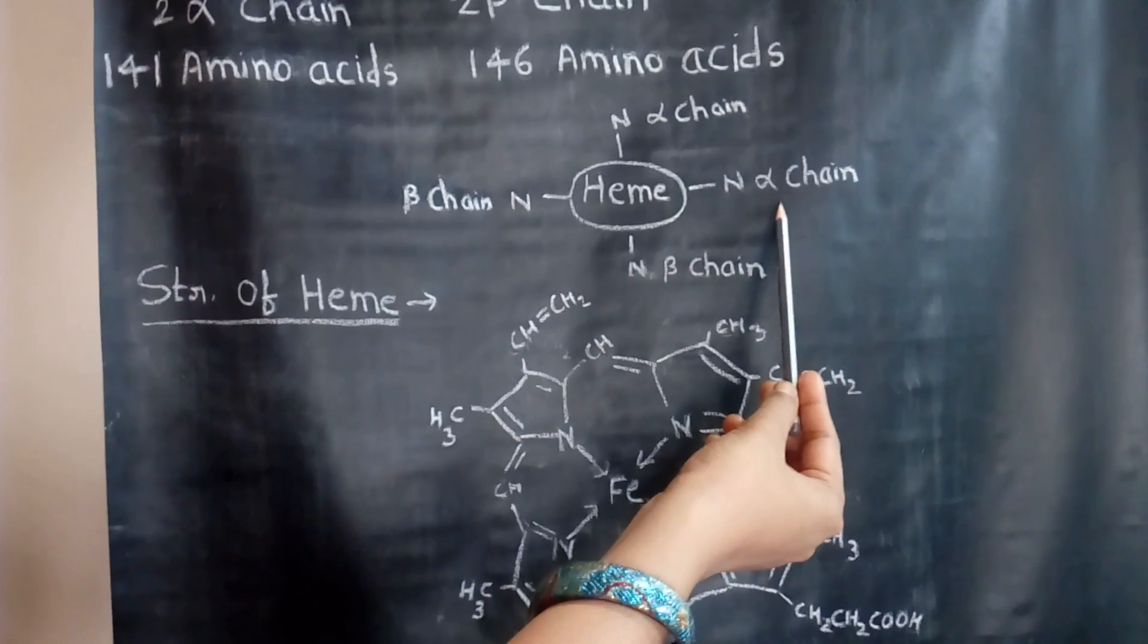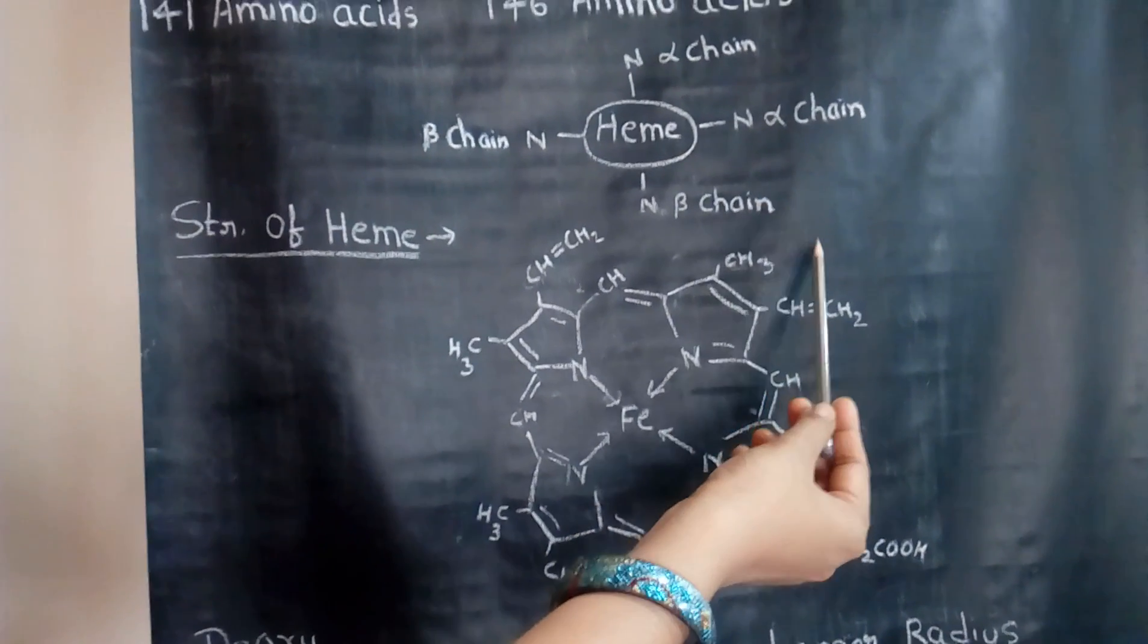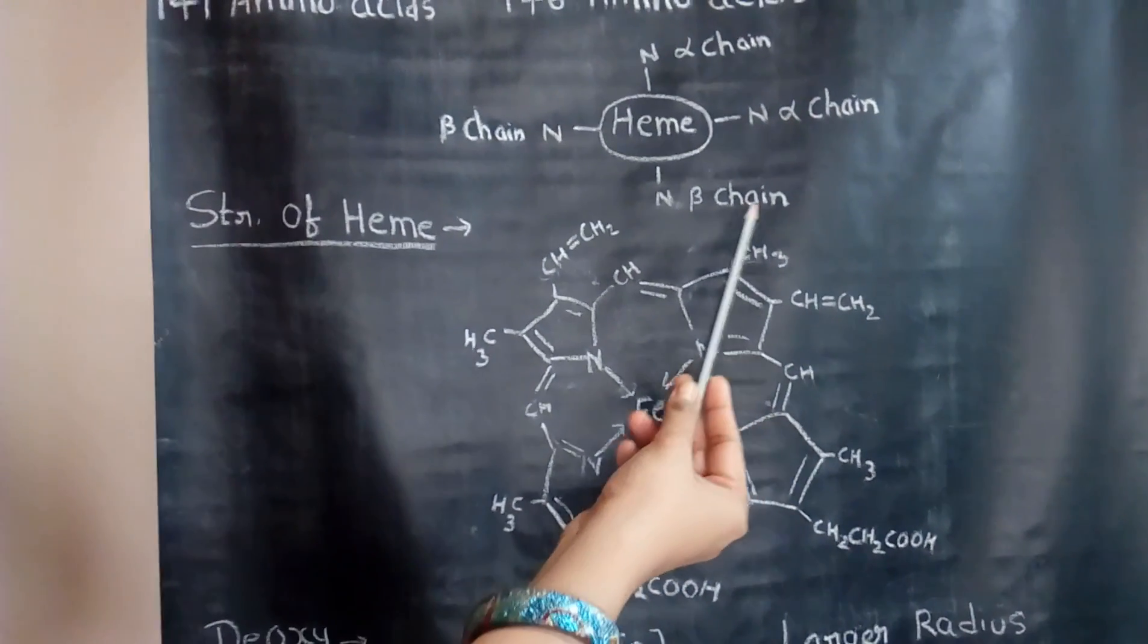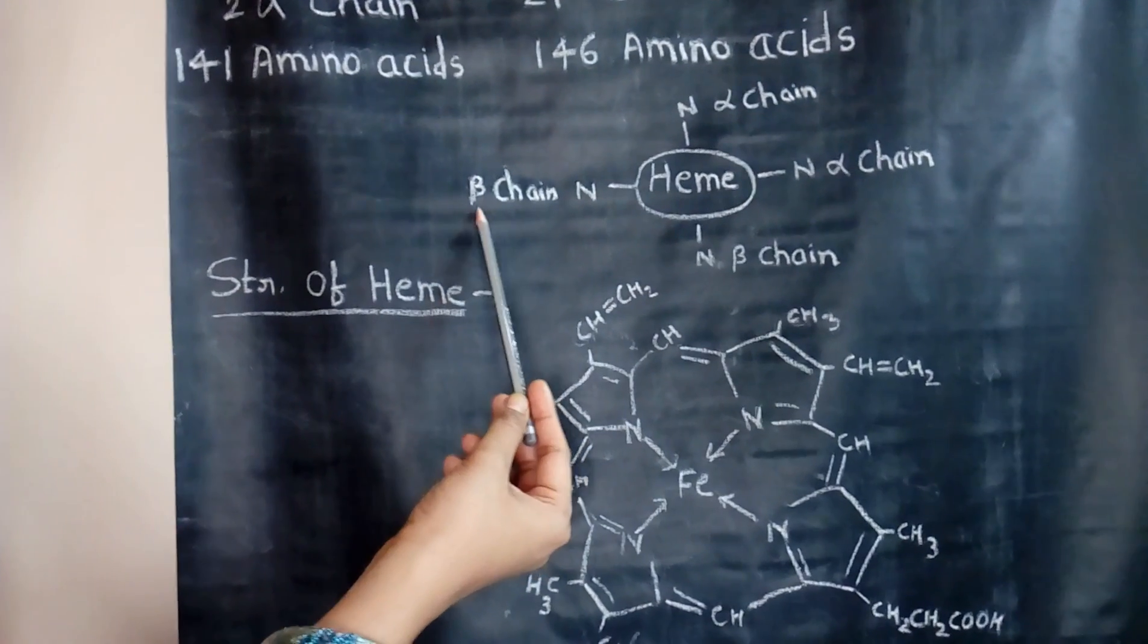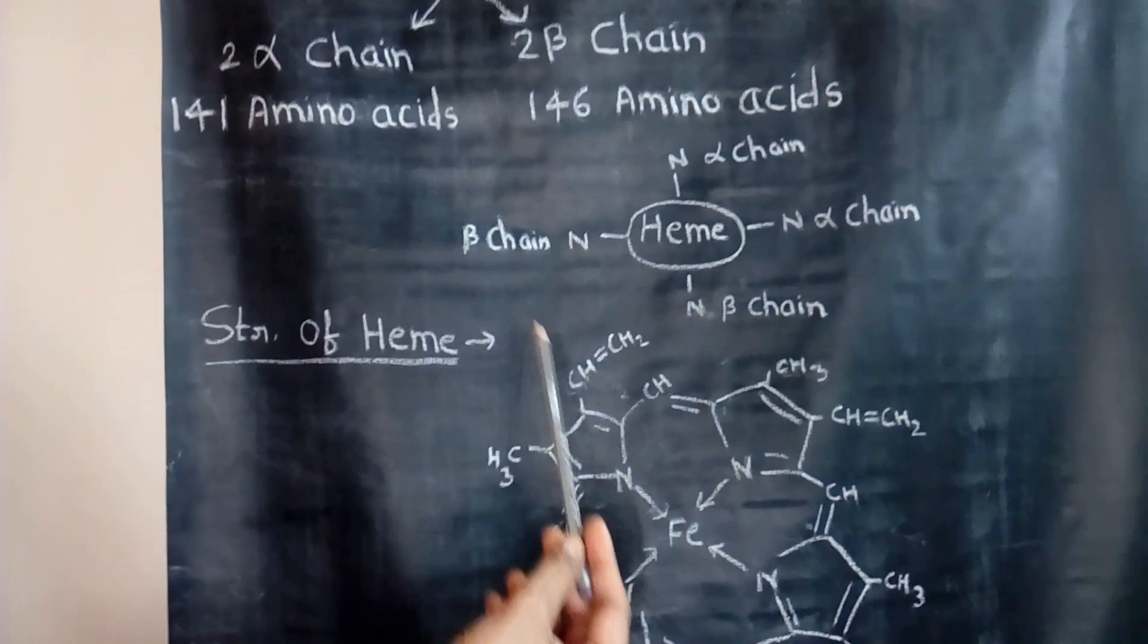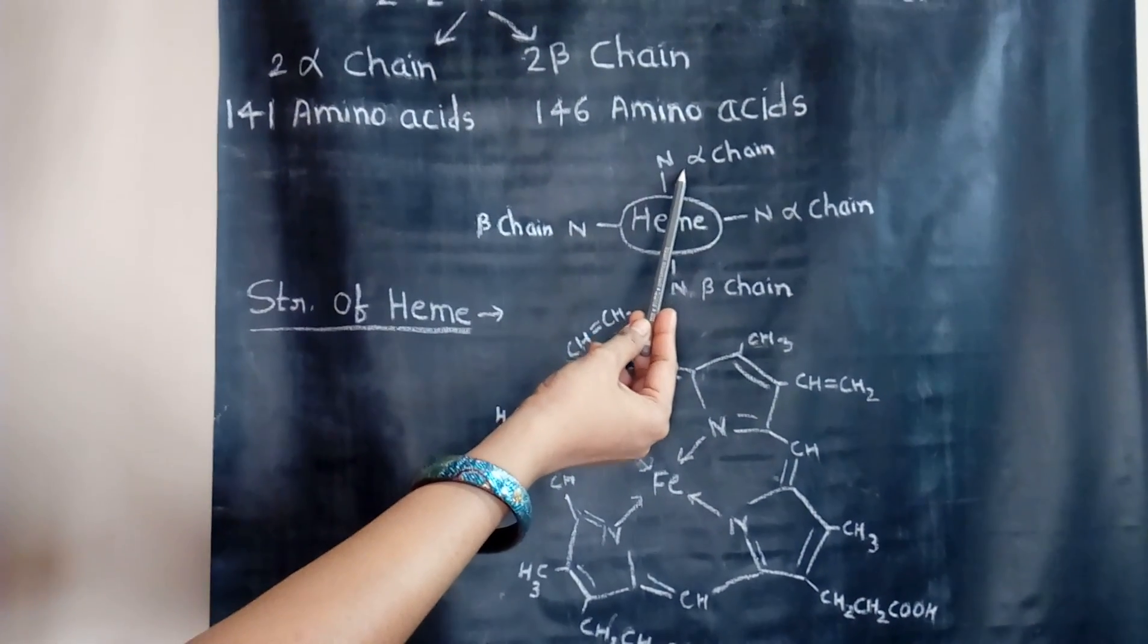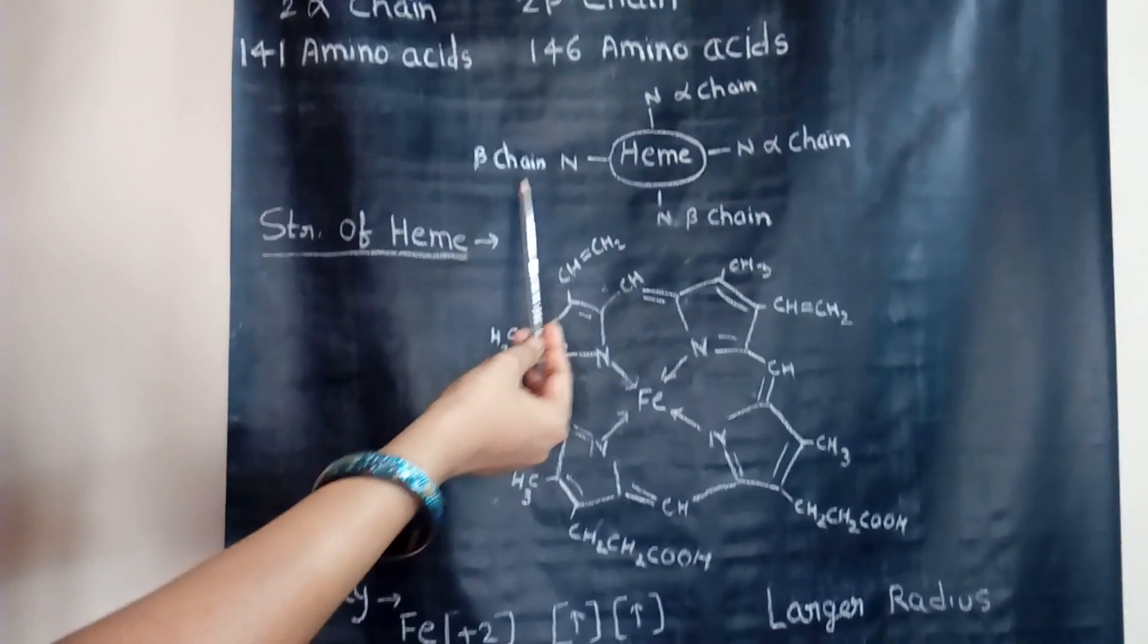The binding of this chain makes a conformational change in another beta chain, and this gets attached to another oxygen molecule much more firmly. The binding of this chain makes a conformational change in this chain, and this gets attached to the oxygen molecule much more firmly. So we see that when one molecule gets attached to one chain, all chains get attached to all oxygen molecules.